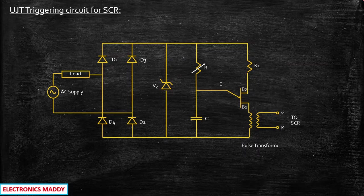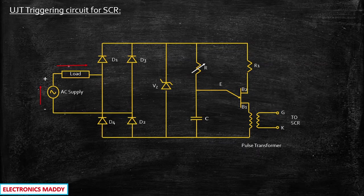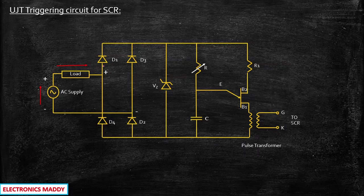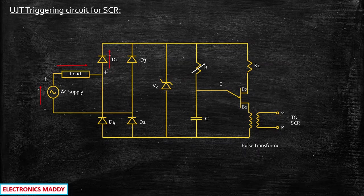Let us consider the positive half cycle of the supply. The polarity will be plus and minus in this particular fashion. Current starts flowing through this path and this positive voltage will be appearing at this terminal with some voltage drop at the load terminals. When you have plus here and minus here, plus is connected to the anode of D1 and minus to the cathode of D2. Because of that, D1 and D2 are forward biased, they act as a short circuit, and consequently the current flows through this path.